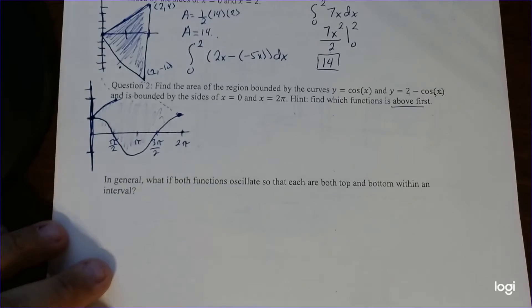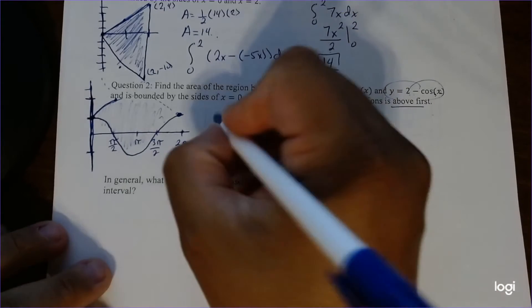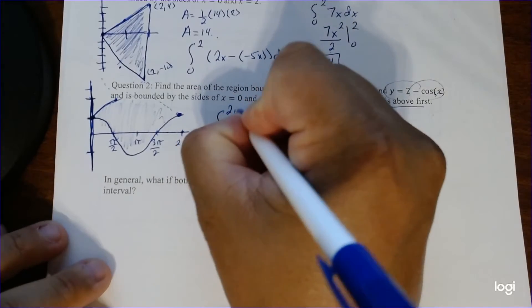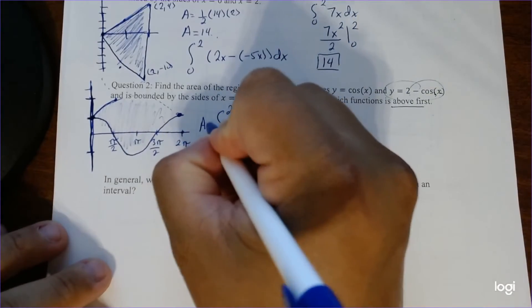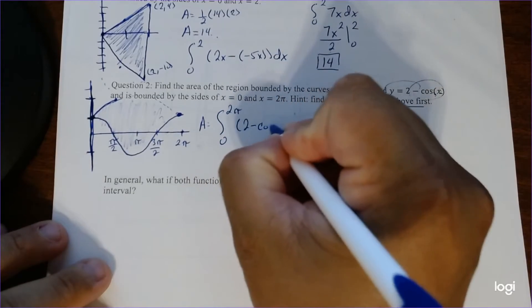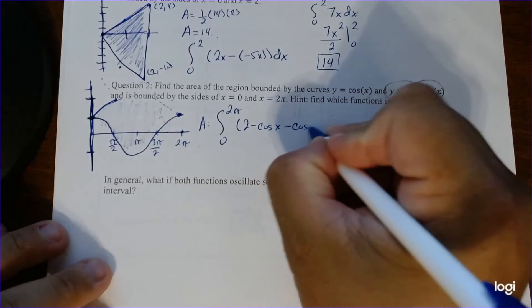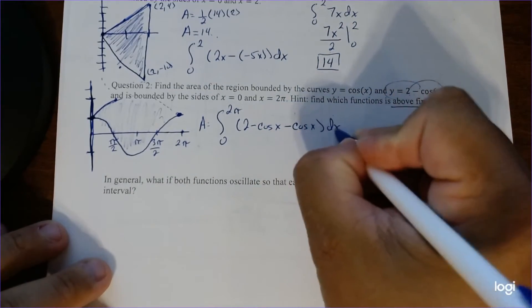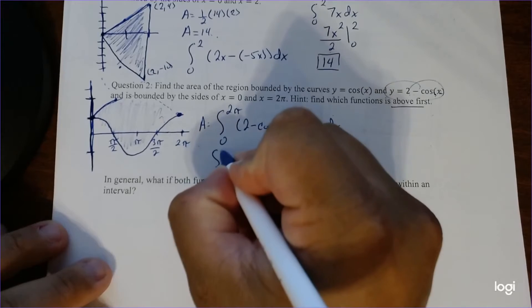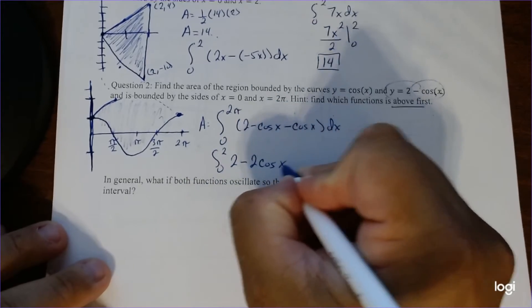So essentially this chunk of the area here. So now you can see which one is definitely above the graph, right? So this is going to be the integral from 0 to 2 pi. There's the area. Of 2 minus cosine x minus the bottom function, which is the cosine of x dx. So putting these together gives you integral of 2 minus 2 cosine of x dx.